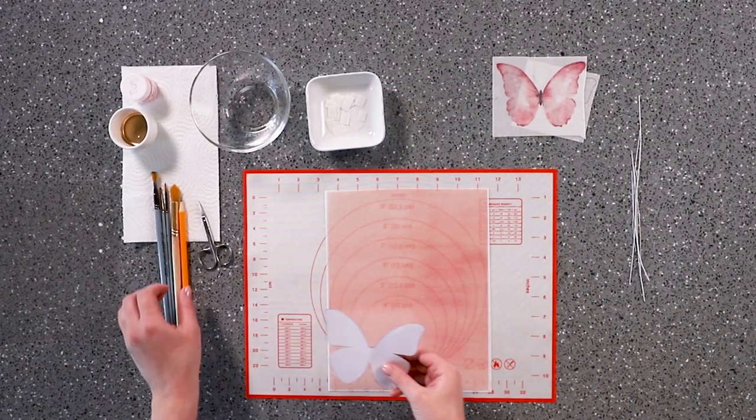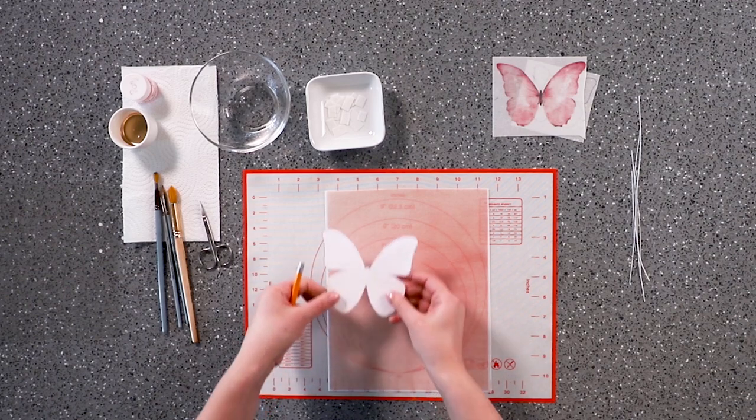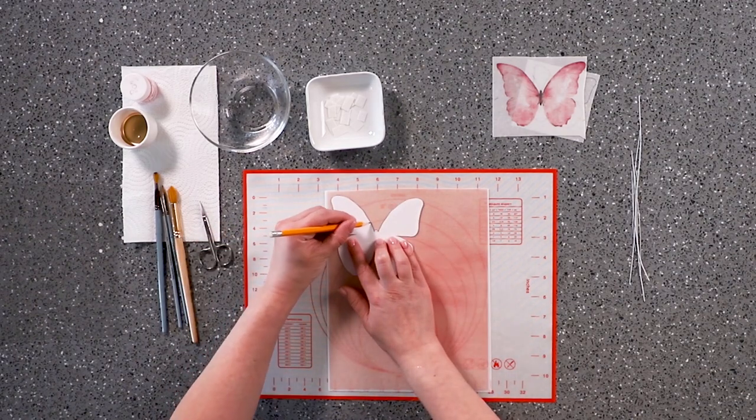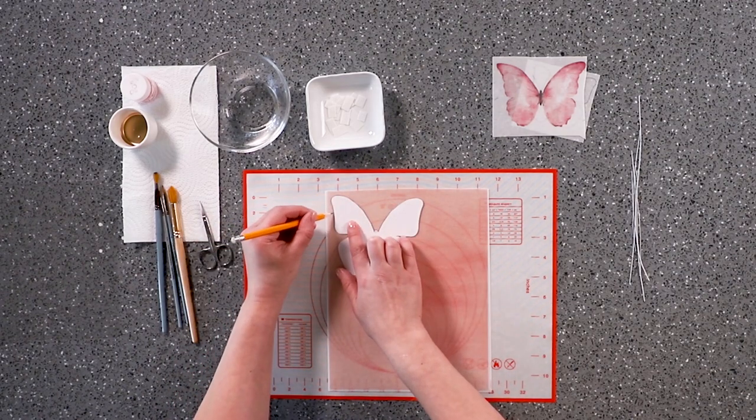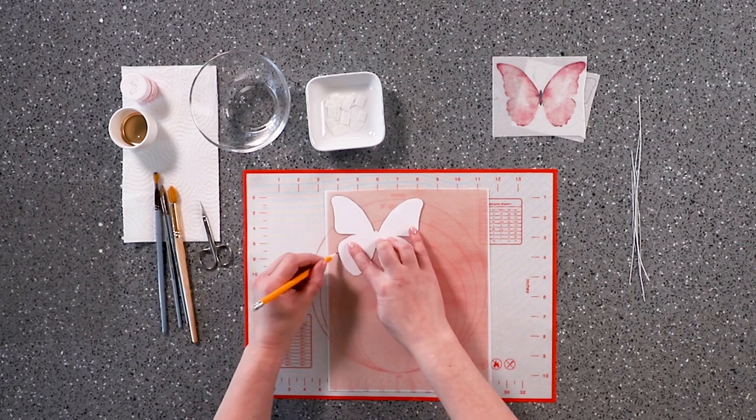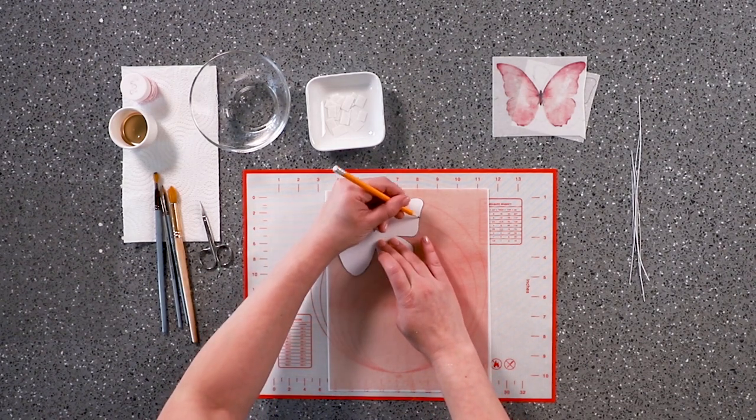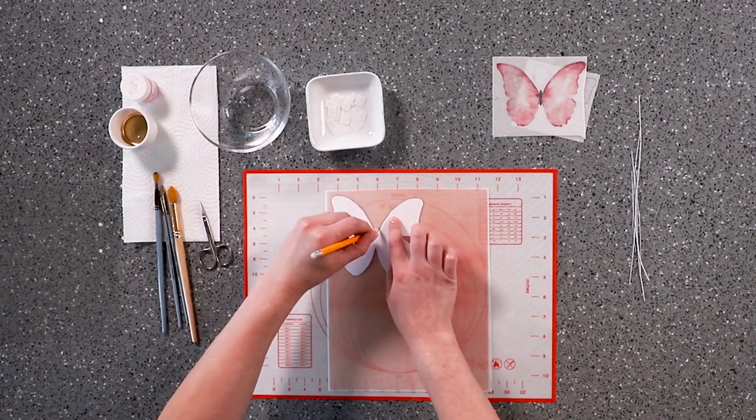Wafer paper comes in thick and thin form. The thick paper is used mainly for cake prints. The thin paper is used to make butterflies and different types of ruffles and flowers. We will use the thin kind.